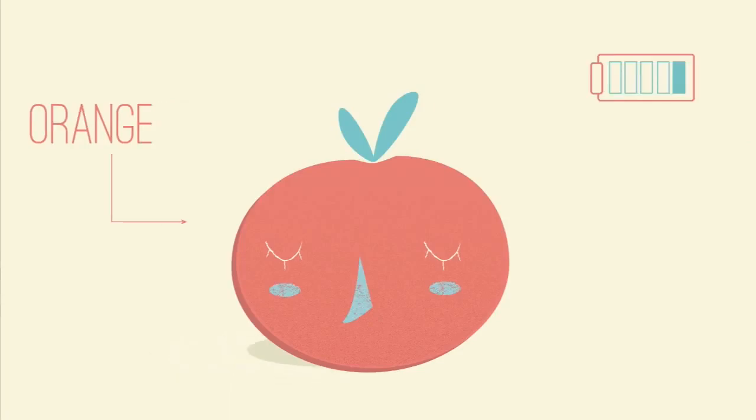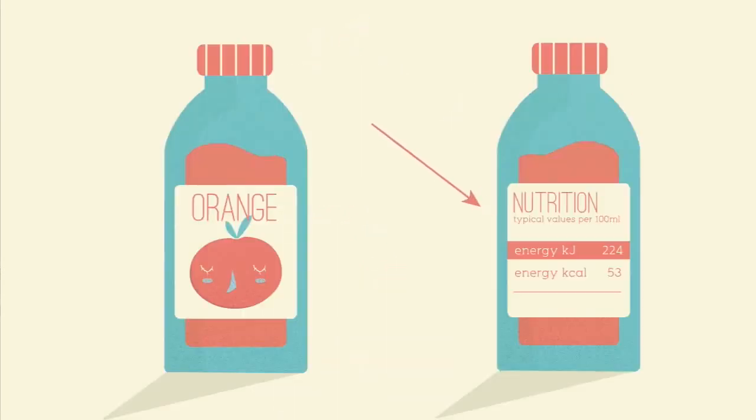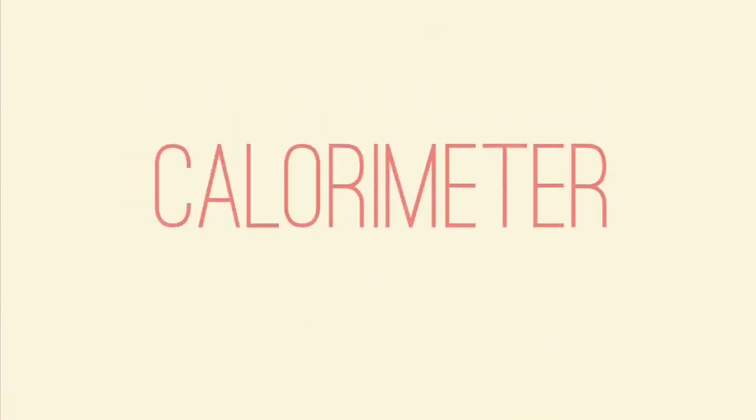When you look at food items, their energy content was worked out by burning the food in oxygen to see how much energy is released. This corresponds to the energy content label and is given in calories. To do this you have to use a calorimeter.